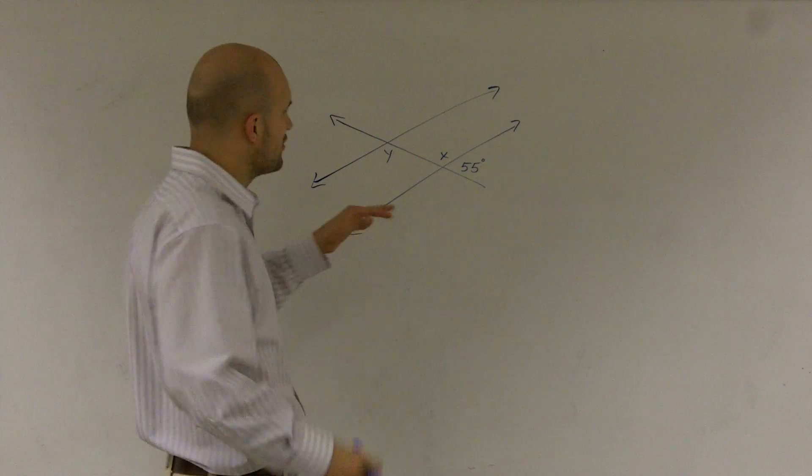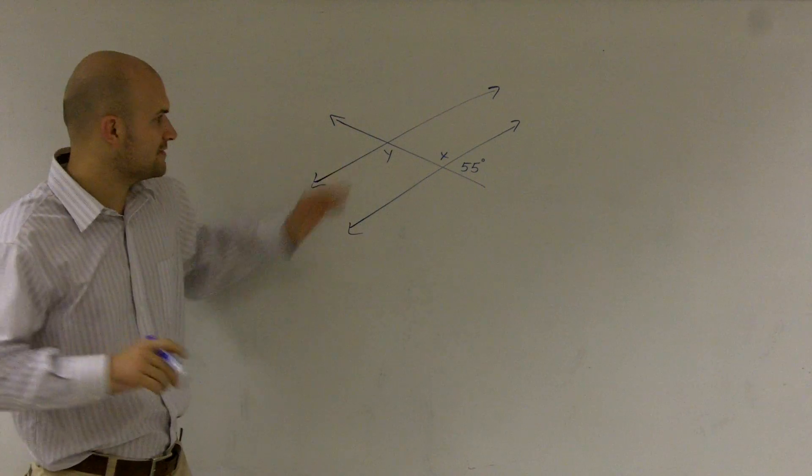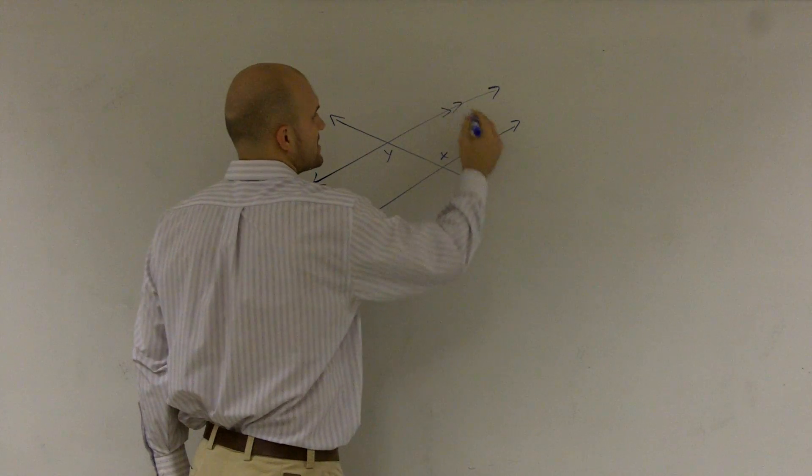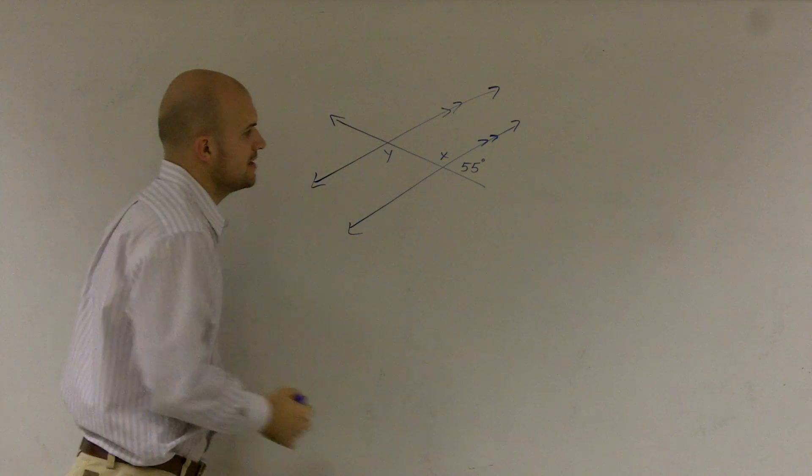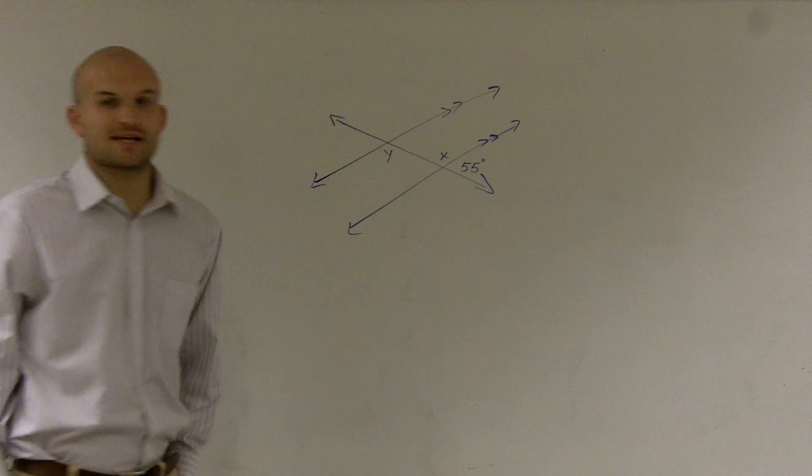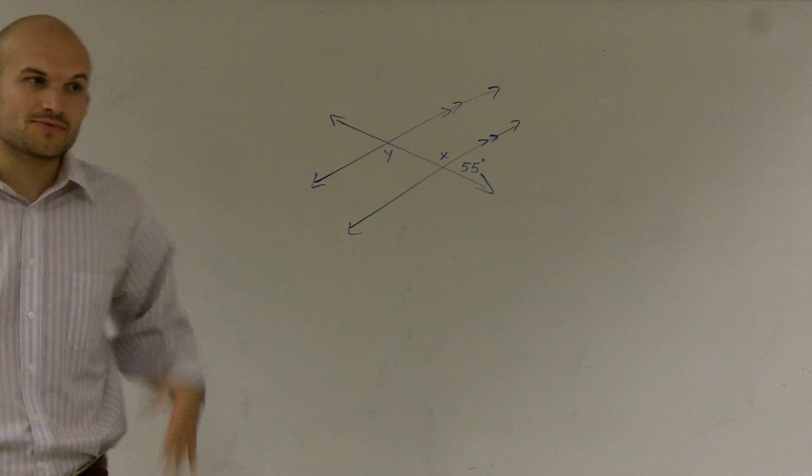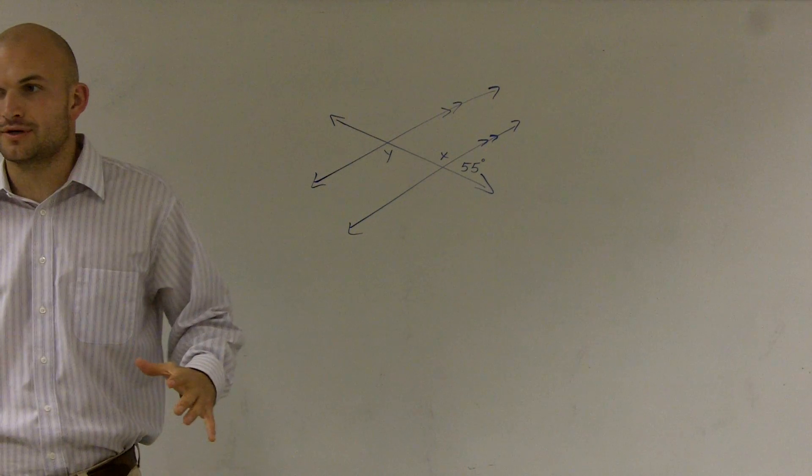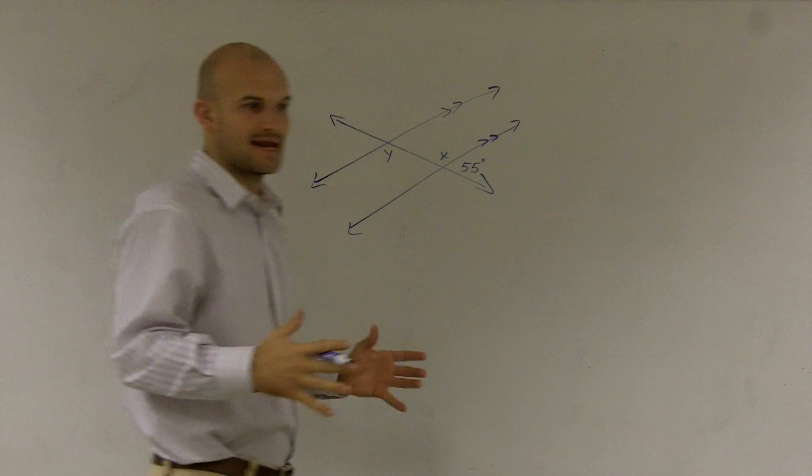All right. What I'd like to do is show you how to solve for x and y, given two parallel lines. I'll represent the parallel lines by giving these double arrows and being crossed by a transversal. So once we have parallel lines and we have a transversal, we have a lot of special things that happen.